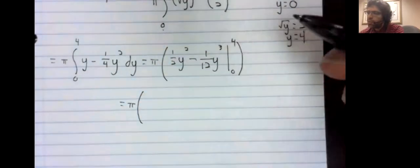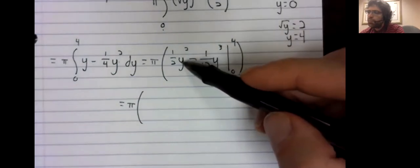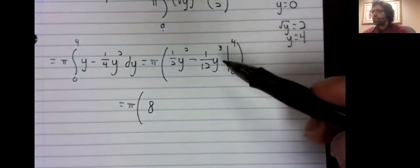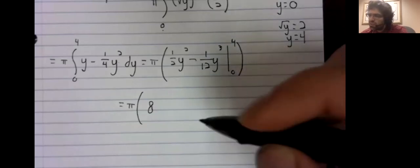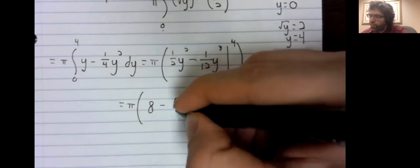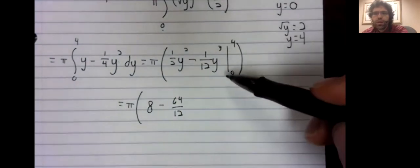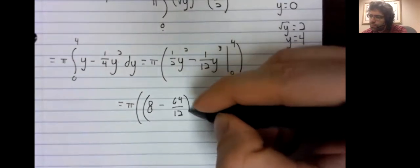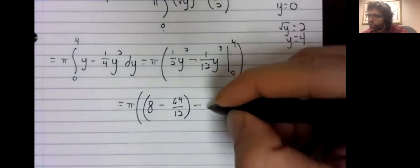And when we stick 4 in here, that's 8. 4 cubed is 64 over 12. When we plug in 0, we get 0 and 0.